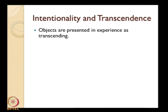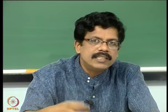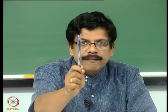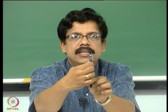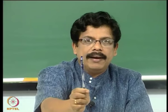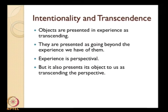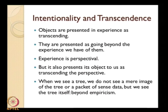Objects are presented in experience as transcending the mind: consciousness points toward something that lies outside. They are presented as going beyond the experience we have of them. Experience is perspectival — we see the pen from one side — but we are intentionally directed toward the full three-dimensional object. When we see a tree, we do not see a mere image or packet of sense data, but the tree itself — going beyond empiricism.